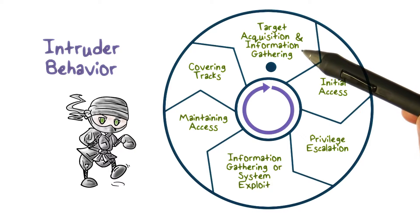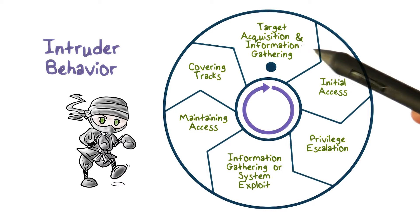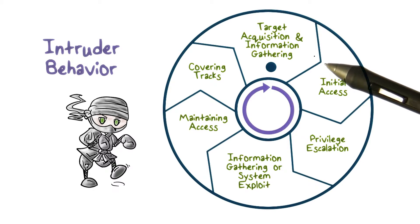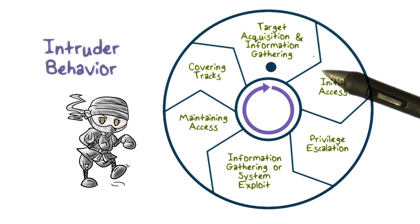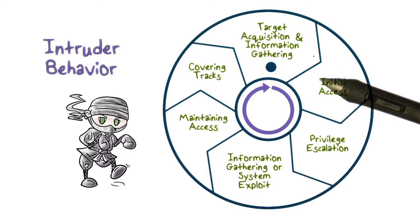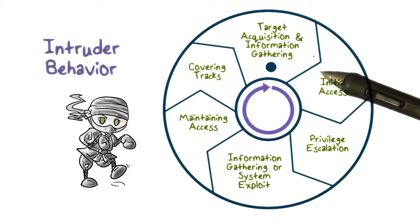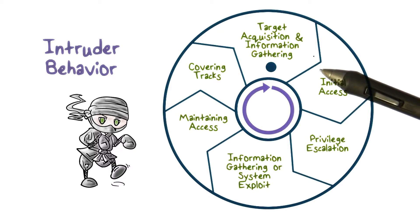The first step is target acquisition and information gathering. The attacker identifies the target systems using publicly available information, both technical and non-technical, and uses network tools to analyze target resources. For example, the attackers can find out what network services are accessible from the internet, and may find out some email accounts of high-level company executives.